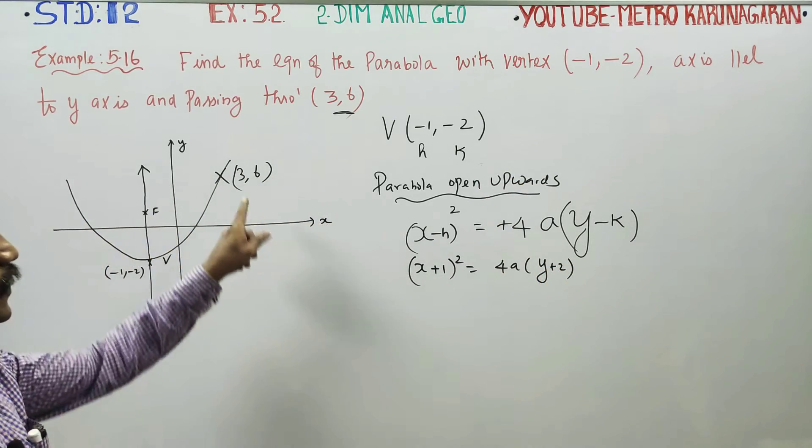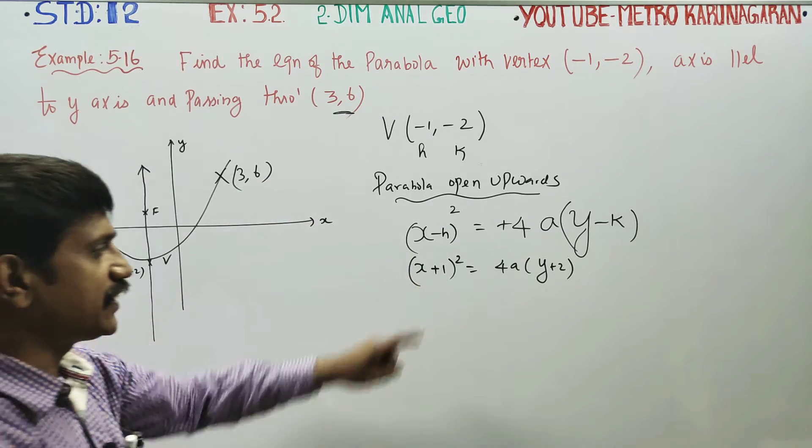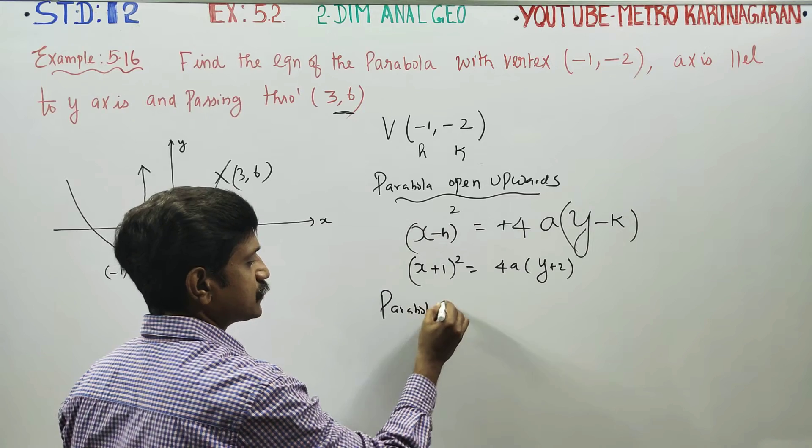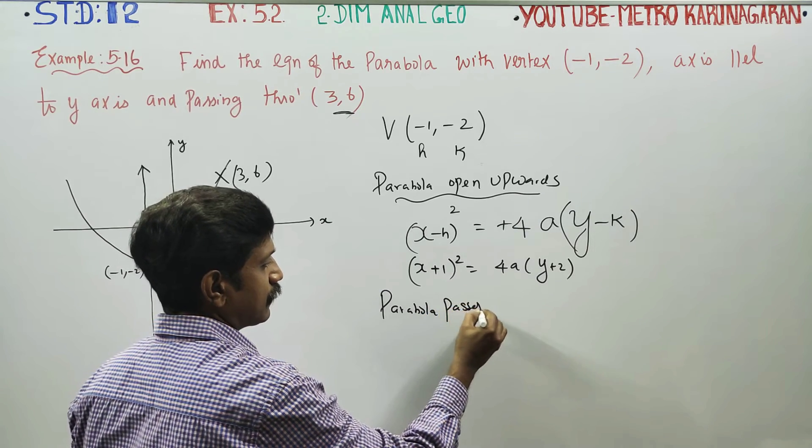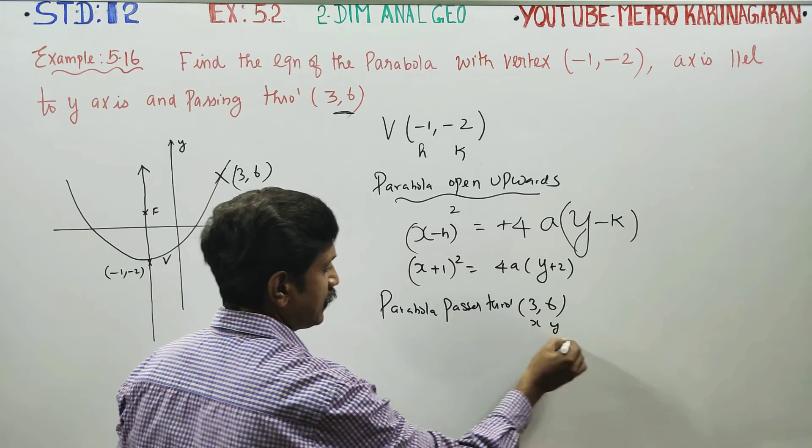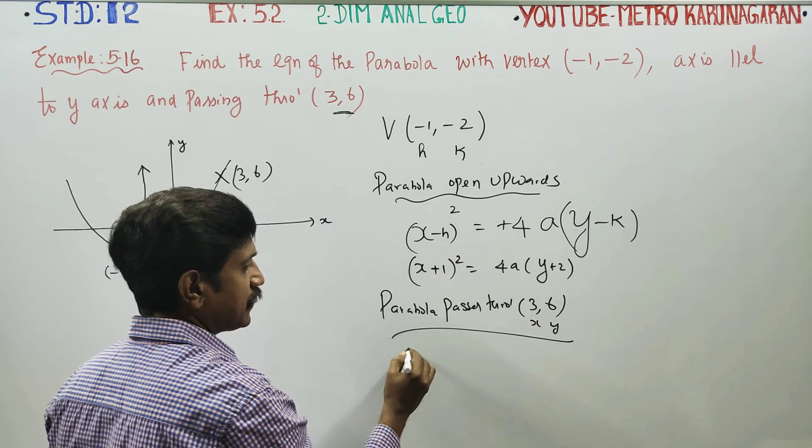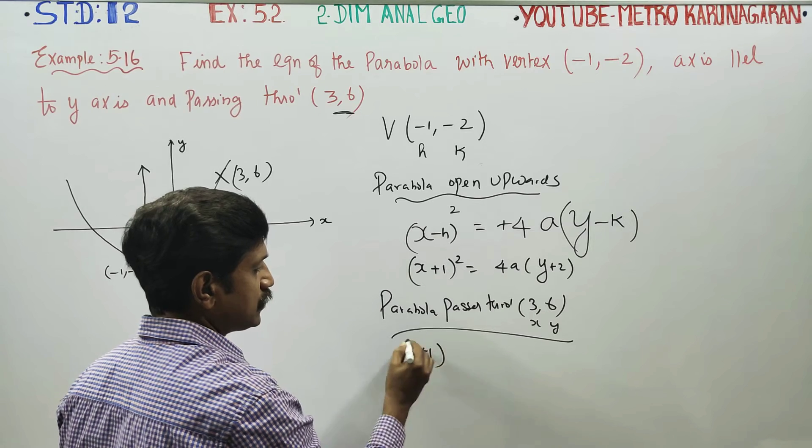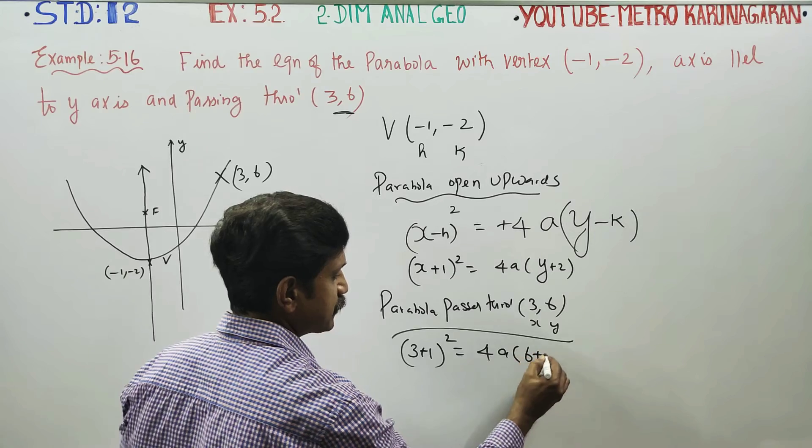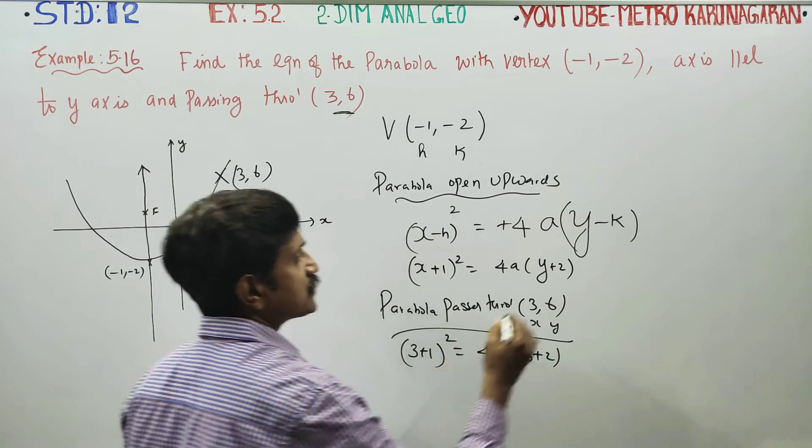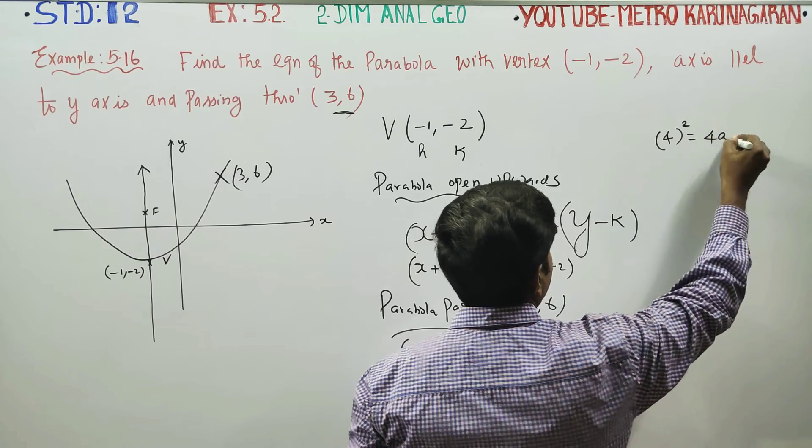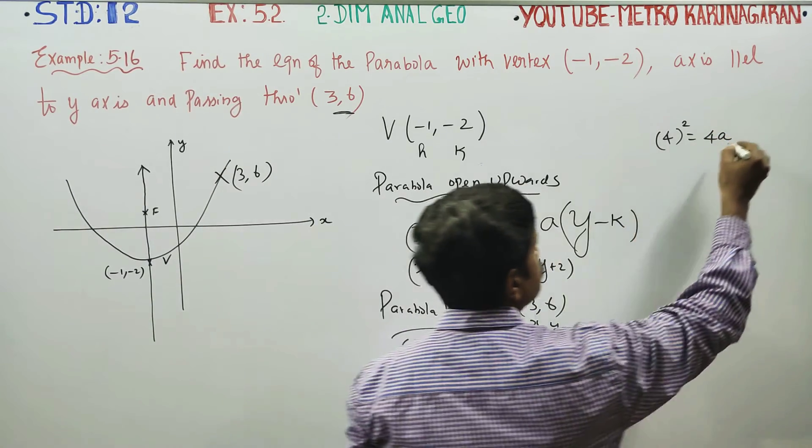But the parabola passes through 3 comma 6. This is x and y - substitute here. You get 3 plus 1 whole squared equals 4a times y plus 2. Y plus 2 is 6 plus 2, which is 8. So 3 plus 1 is 4, 4 squared equals 4a times 8.